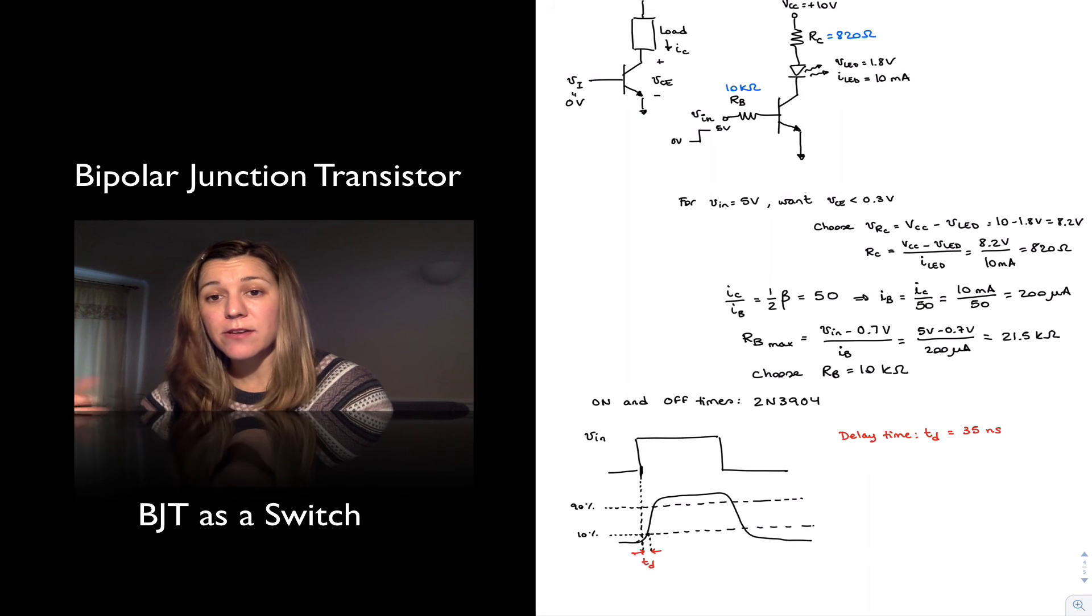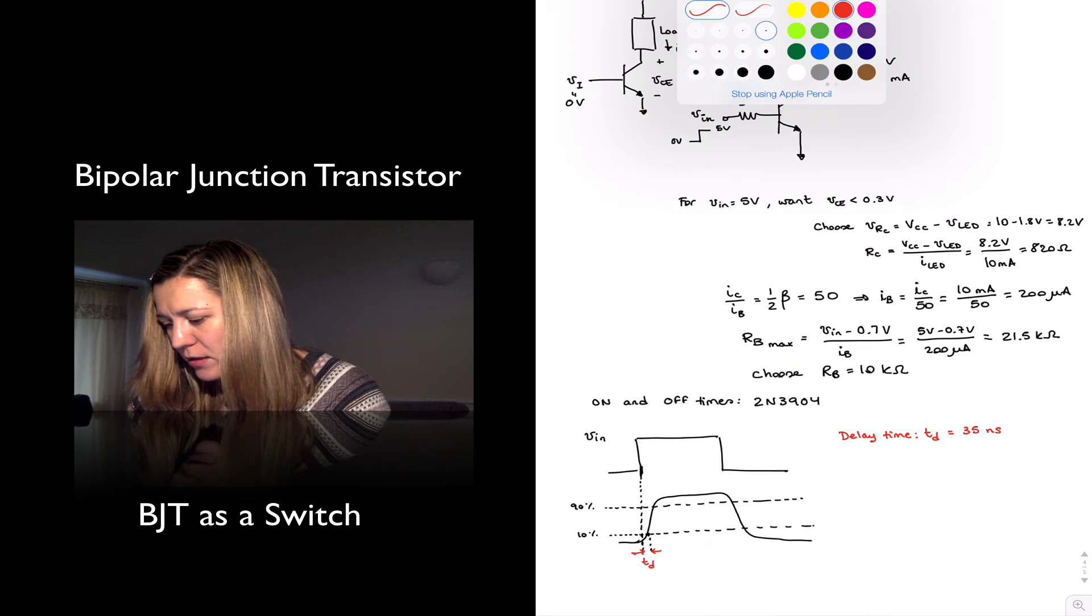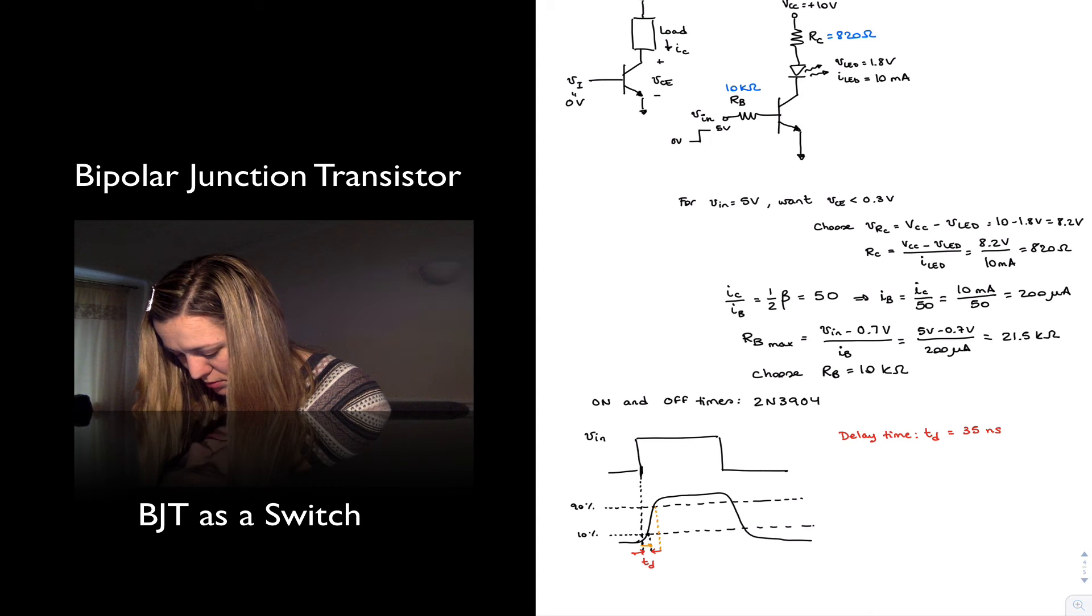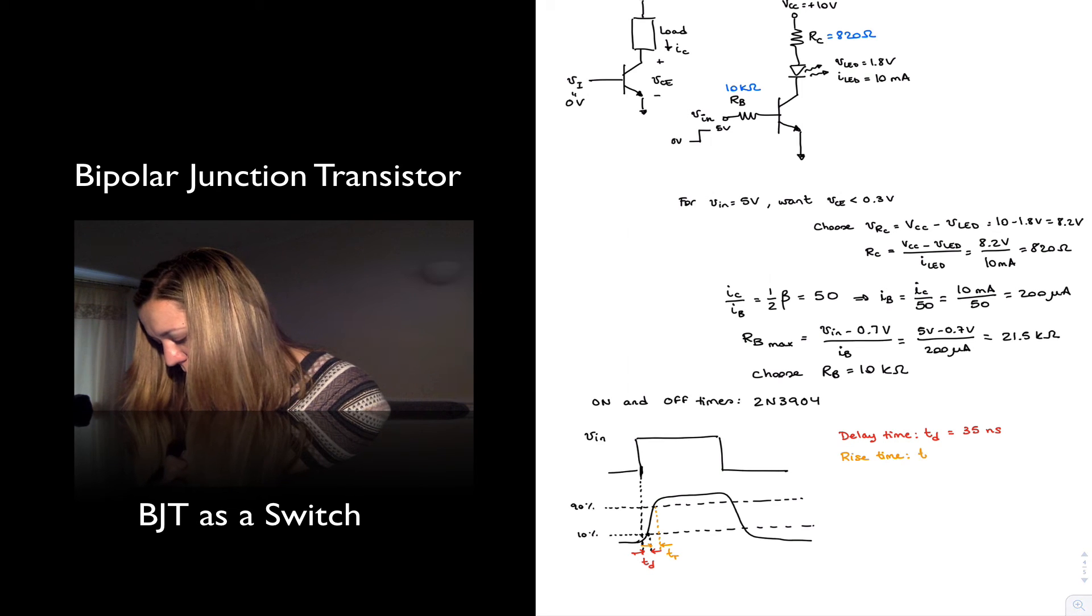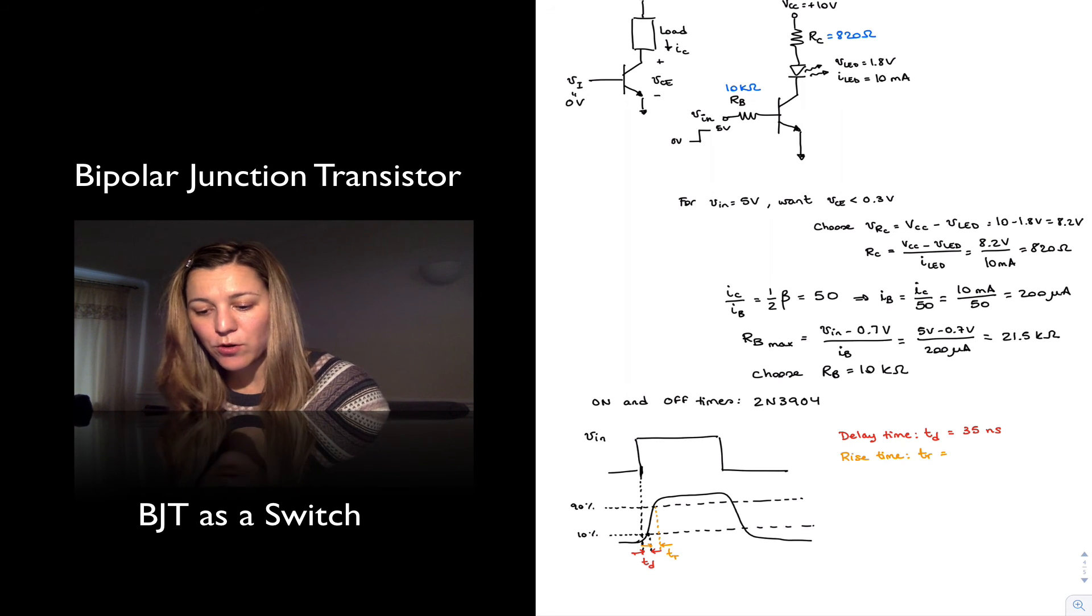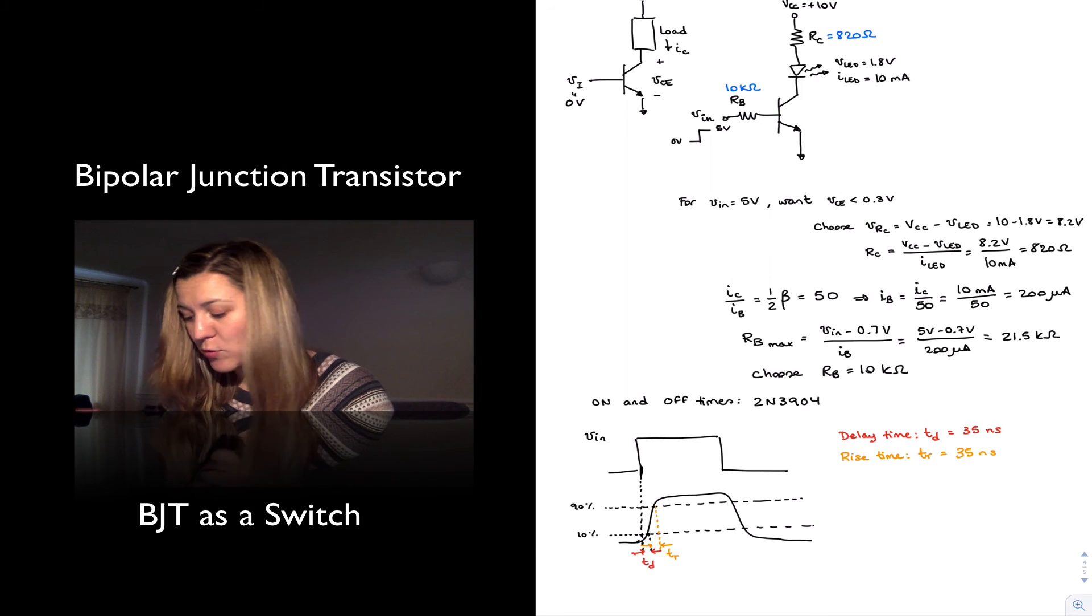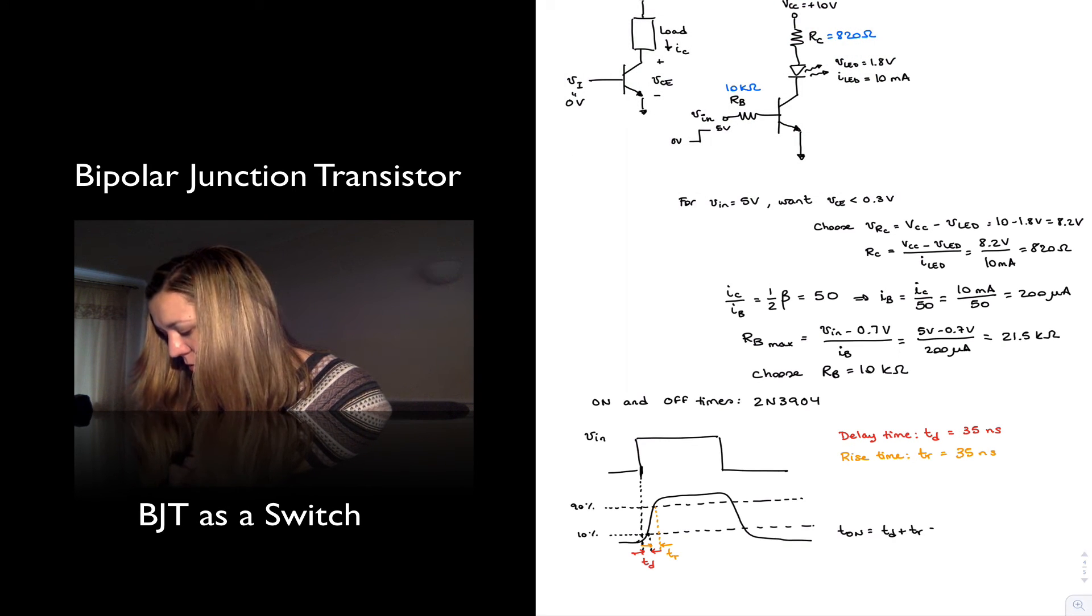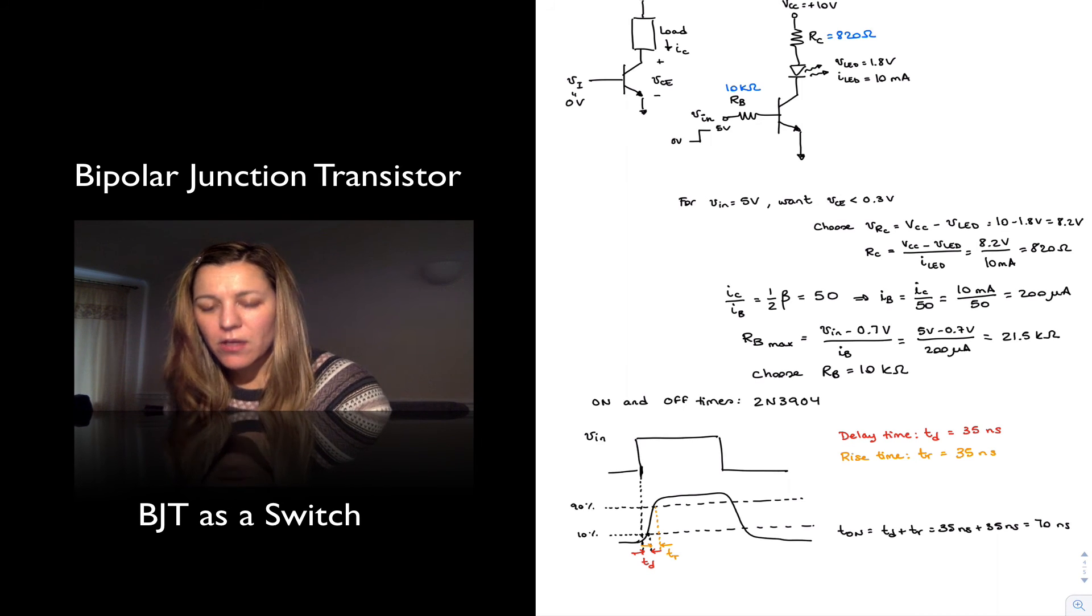Then I have my rise time. That is the time it takes for the output to go from the 10% point to the 90% point. That's fairly standard definition. And so that's going to be my rise time. In the case of the 3904, it's 35 nanoseconds. And so my whole turning on time is going to be the addition of the rise time plus the delay time. So I can calculate it now as being my t on equals td plus tr, or 35 nanoseconds plus 35 nanoseconds, for a total of 70 nanoseconds.